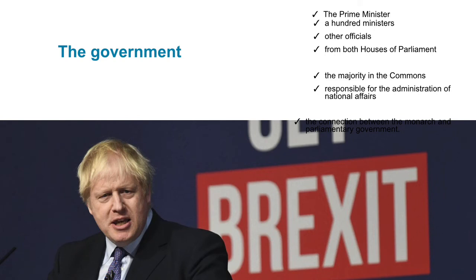The party which wins most parliamentary seats at a general election, or which has the support of a majority of MPs in the House of Commons, usually forms the new government. The British government normally consists of over 100 ministers and other officials chosen from both Houses of Parliament, who are appointed by the monarch on the advice of the Prime Minister. They are collectively responsible for the administration of national affairs.